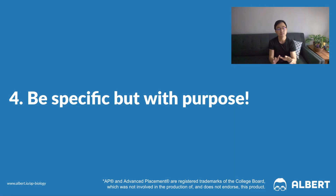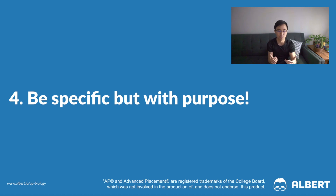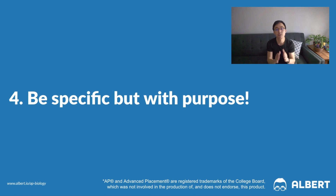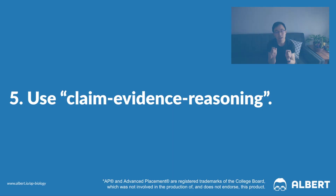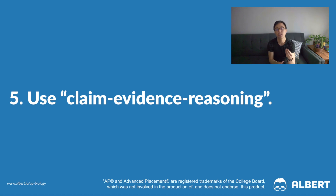Number four: be specific, but with a purpose. Sometimes students include unnecessary information that doesn't actually answer what the question is asking for. Provide your reasoning — don't just repeat something that was given to you in the prompt. Make sure that you're actually being specific with purpose. That leads us to tip number five, which is to make sure that you use claim-evidence-reasoning. This is where you break down an argument into these parts to make your point more clear: state a claim, cite the evidence, and provide your reasoning.